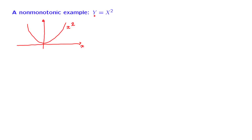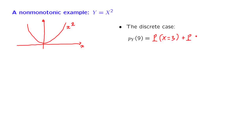How can we find the distribution of y? As a warm-up, let us look at the discrete case. As an example of the calculation, let us find a formula for the probability that the random variable y takes a value of 9. This event can happen in two ways: it can happen if x is equal to 3, but it can also happen if x is equal to negative 3. These are the two and only two ways that y can take a value of 9. We can generalize this: the probability that y takes on a specific value, little y, can be found by adding the probabilities of all the different x's that lead to that particular value.